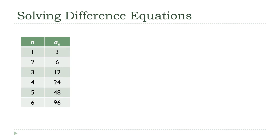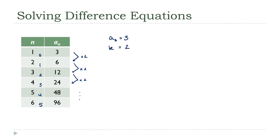Here is the sequence I presented in the very first lecture when we were talking about recurrence. Based on what we've been discussing, we can now come up with an explicit formula for it almost trivially. Every term is two times the previous one — exactly the kind of situation we've been talking about. The only twist is the indexes don't start at zero, but we can fix that by temporarily renumbering starting at zero. Then a₀ = 3 and k = 2, giving us aₙ = 3·2ⁿ.